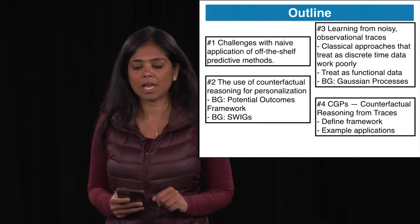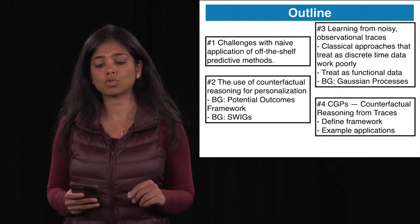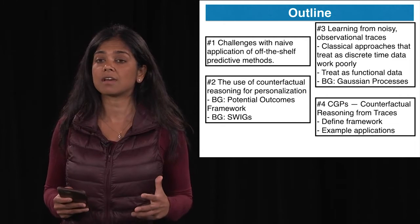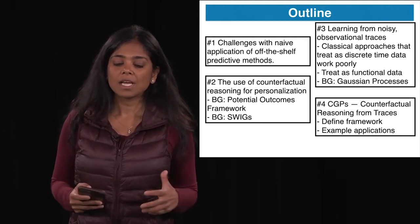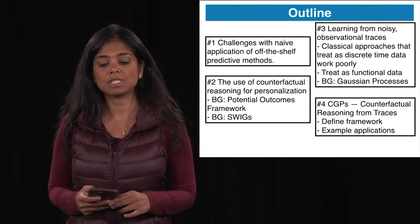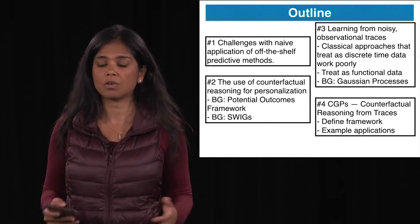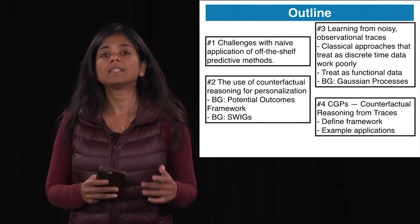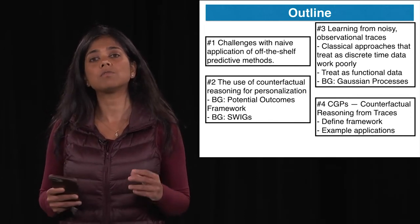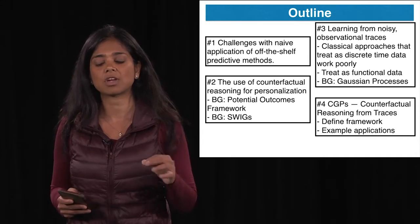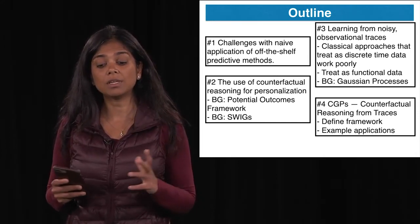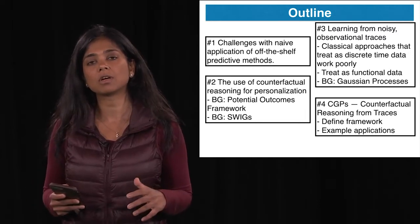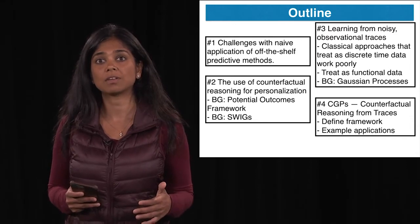Here's the broad outline of the talk. We'll start by motivating why we want this approach, giving examples where naive application of off-the-shelf predictive methods produces counterintuitive answers. Next, we'll give background on counterfactual reasoning for personalization — introducing the potential outcomes framework, SWIGs as a graphical representation for counterfactual graphs, and a brief introduction to Gaussian processes, which we'll use for modeling potential outcomes because electronic health record data are highly noisy. Finally, we'll show examples using this framework on EHR data for a variety of applications.